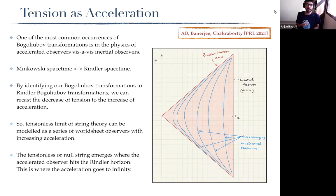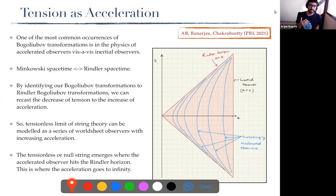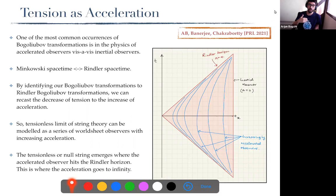When we think about Bogoliubov transformations, one of the first things we think about is Rindler spacetimes. What we did in this work is identify our Bogoliubov transformations with Rindler-Bogoliubov transformations in two dimensions. In that case, you can recast this decrease of tension on the worldsheet as an increase of the acceleration of the worldsheet. We model the tensionless limit of string theory as a series of worldsheet observers with increasing acceleration. The tensionless or null string emerges when this accelerated observer actually hits the Rindler horizon, where the acceleration goes to infinity.